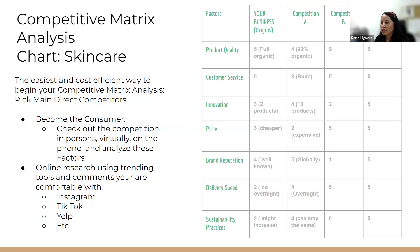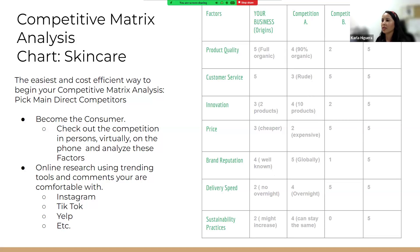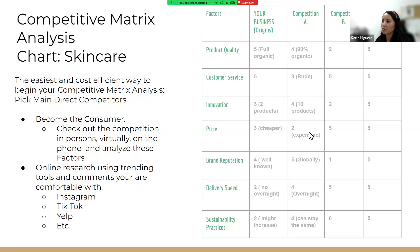Sustainability practices, I put them at a two but it might increase. I would then compare them with another company whose products are 90% organic, so rated at a four for quality. Their customer service I put at a three because they were rude when I called about an undelivered order with no solutions offered. Innovation I give a four because they have tons of products and can appeal to a larger audience. Their price I give a two because they're very expensive even though products aren't fully organic. Brand reputation is a five because they're known globally. Delivery speed a four because they offer overnight.